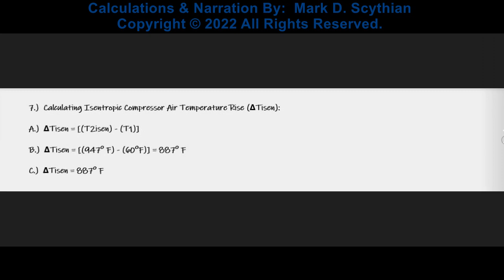Next, we calculate the isentropic compressor air temperature rise, the delta T — the difference between the compressor discharge air temperature and the outside intake air. Isentropically, that value equals 887 degrees Fahrenheit.